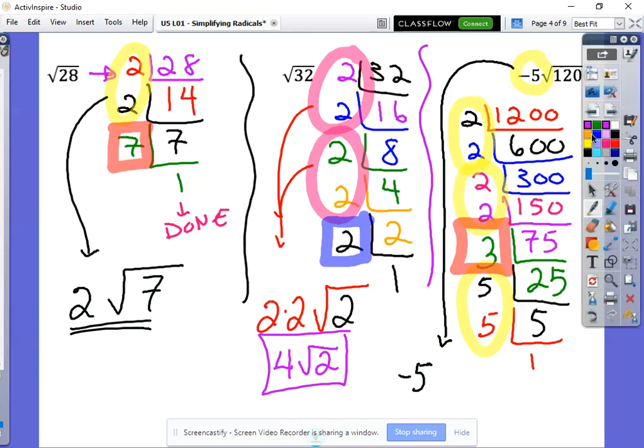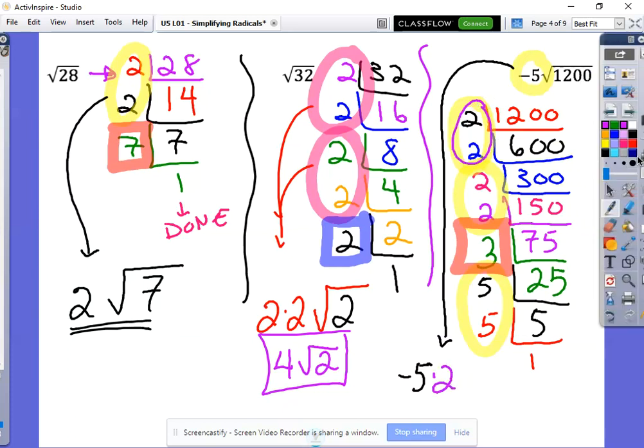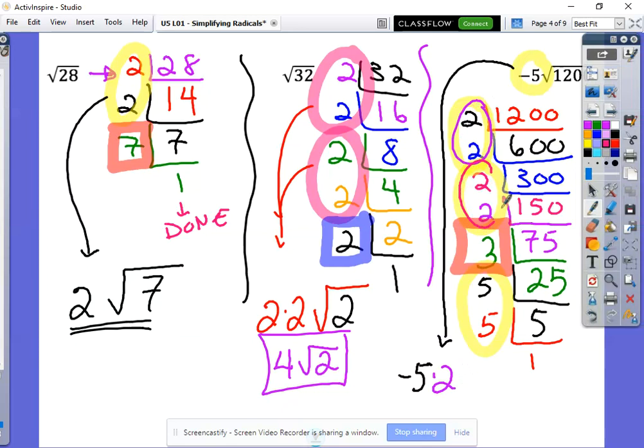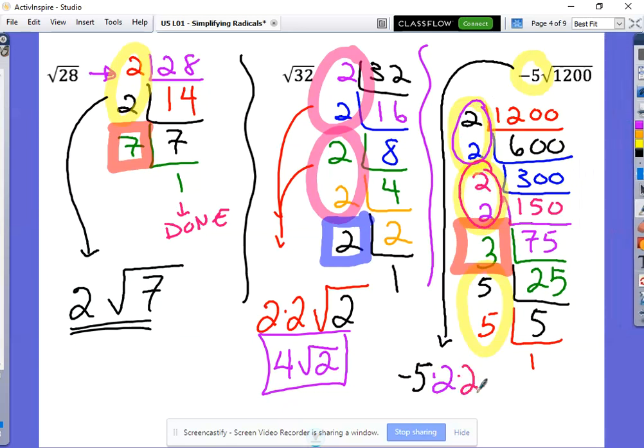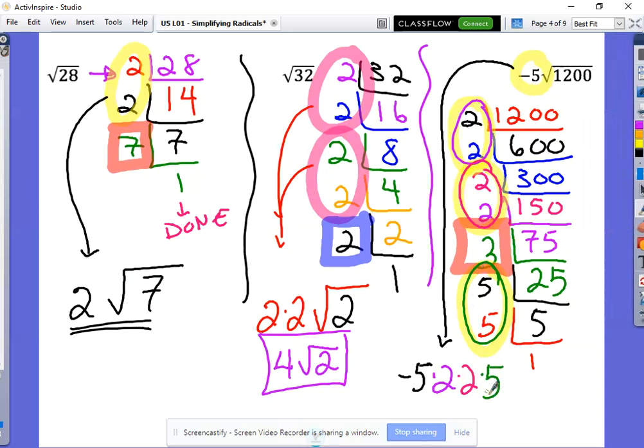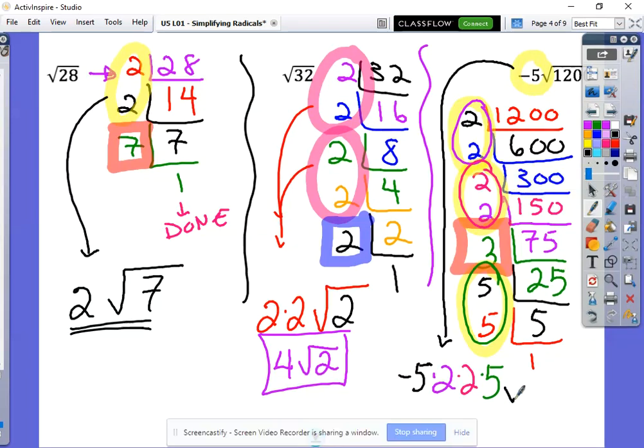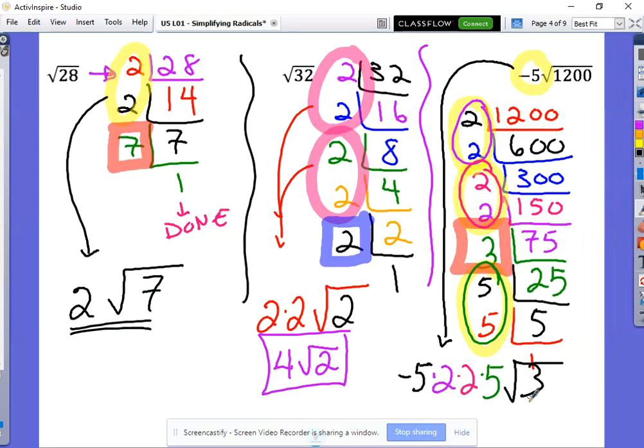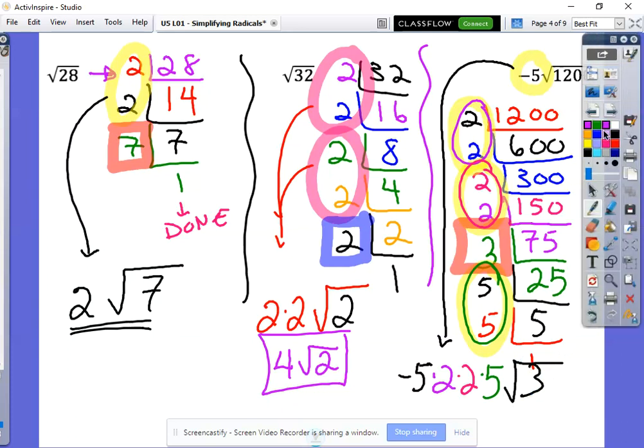Then we have this pair of twos, so times two. Then we have another pair of twos, so times two. Then we have a pair of fives, so times five. And last but not least inside our radical we have our single three.